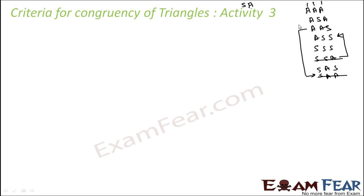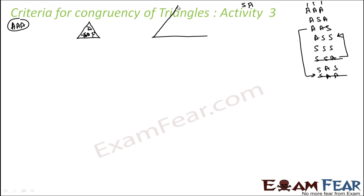Let's try AAA — all three angles the same. Drawing two equilateral triangles where all corresponding angles are equal, you will see that they are not congruent — one can be bigger than the other. So the AAA congruency criterion is not true.